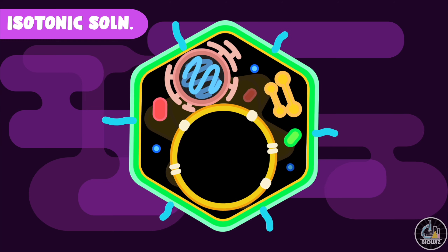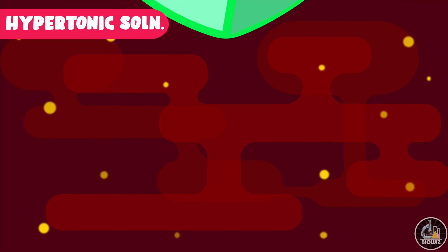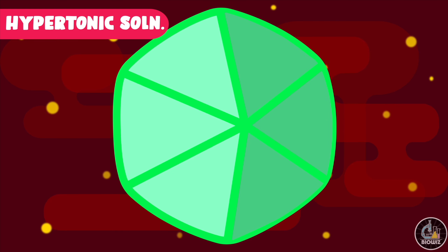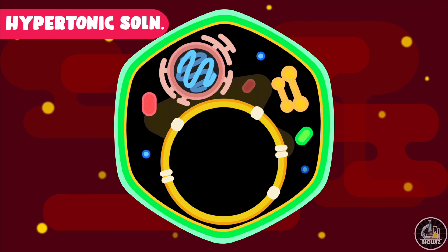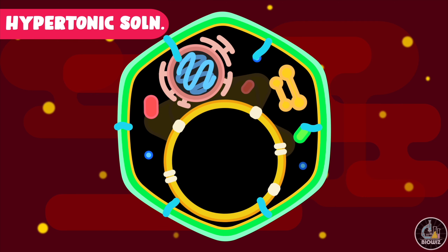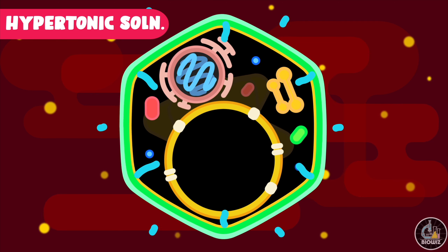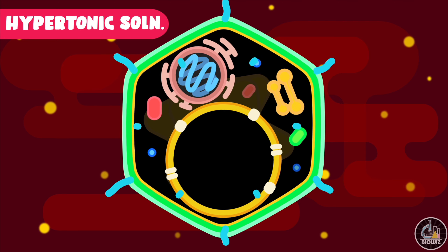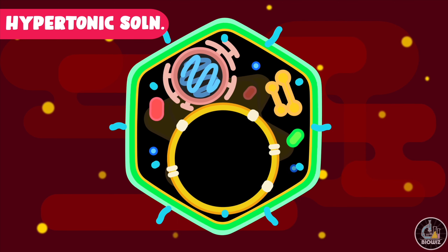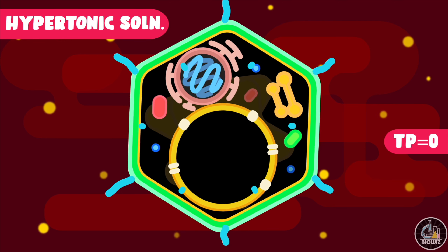Placing the cell in a hypertonic solution, the cell starts to lose water as the osmotic pressure of the solution is higher than that of the cell. Due to the decrease in cell volume, the turgor pressure exerted on the cell wall decreases continuously and at a time it reaches zero. The cell which has no turgor pressure on its cell wall is called a flaccid cell.